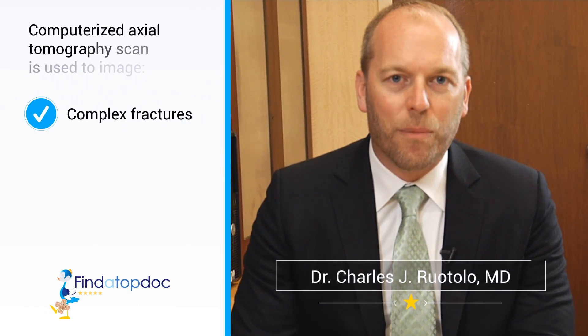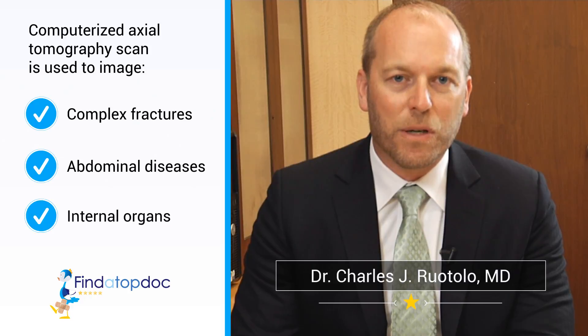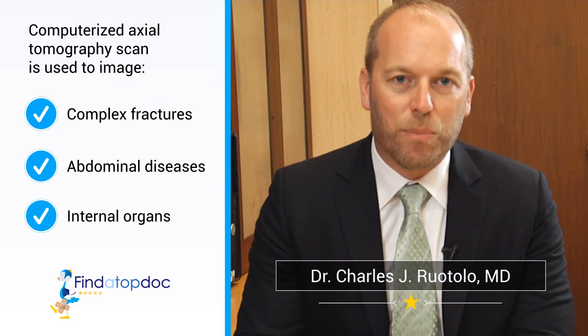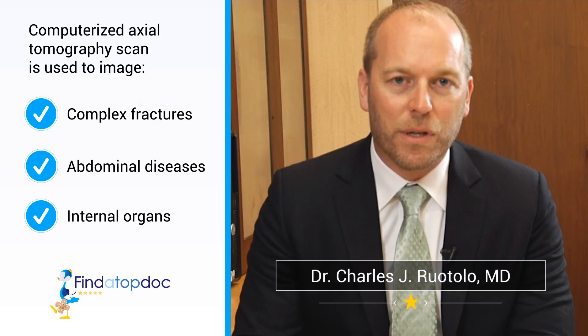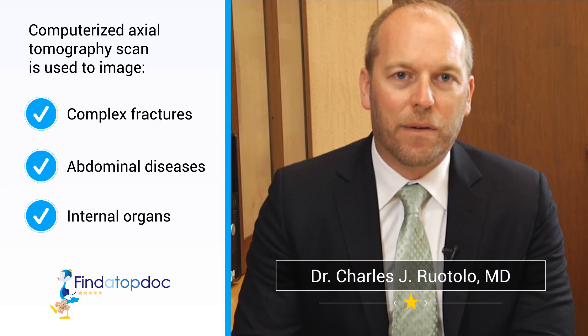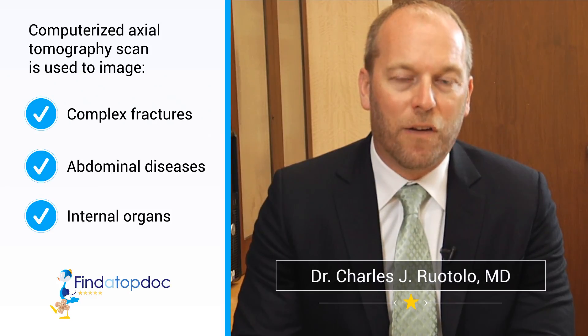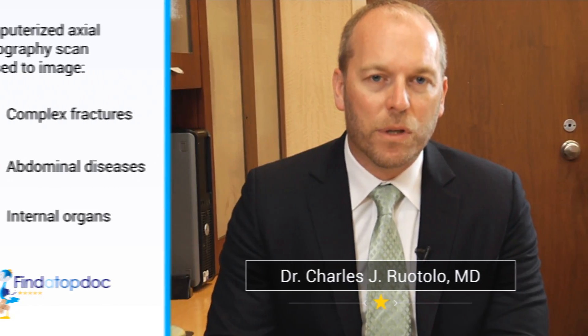A CT scan, or computed axial tomography, is a special type of x-ray where it's a computerized program that looks at axial images of someone's body part, which really shows specialized imaging of bone. That is different than an MRI — an MRI will do a better job at looking at soft tissue, but a CT scan will do a better job at looking at the anatomy of a fracture or an injury to bone.